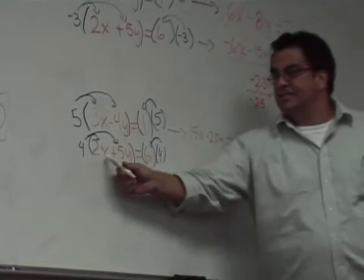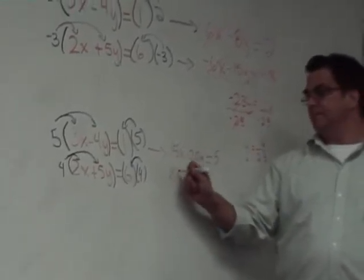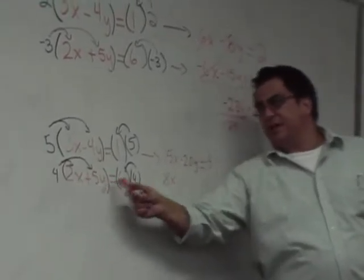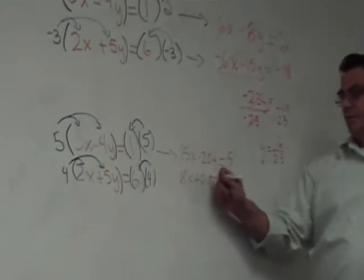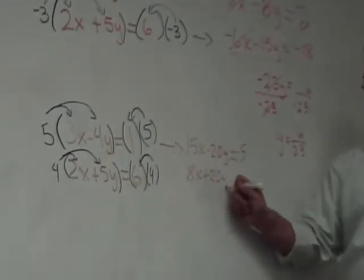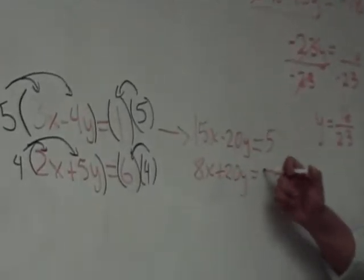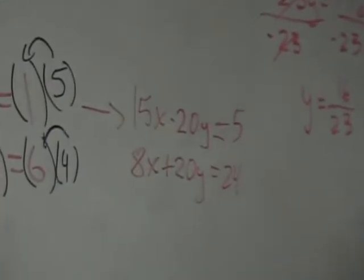4 times 2x is 8x. 4 times 5y is positive 20y. And 4 times 6 is 24.